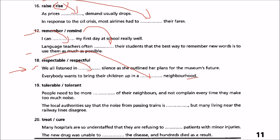Tolerable and tolerant: people need to be more tolerant of their neighbors and not complain every time they make too much noise. The local authorities say that the noise from passing trains is tolerable, but many living near the railway lines disagree. Many hospitals are so understaffed that they are refusing to treat patients with minor injuries — injuries are treated, not cured. A problem which is chronic or long-lasting is cured; a new drug was unable to cure the disease and hundreds died as a result.